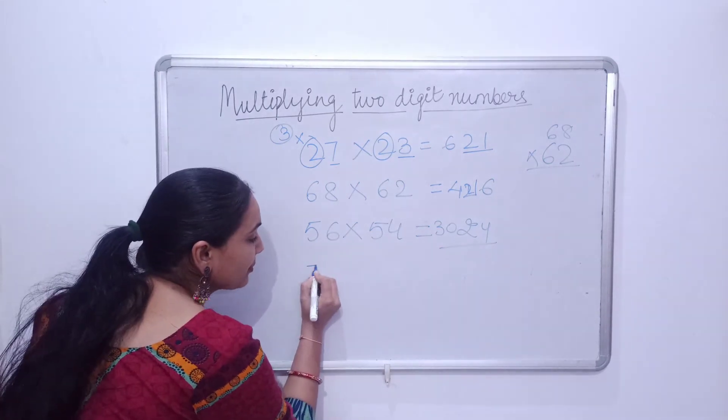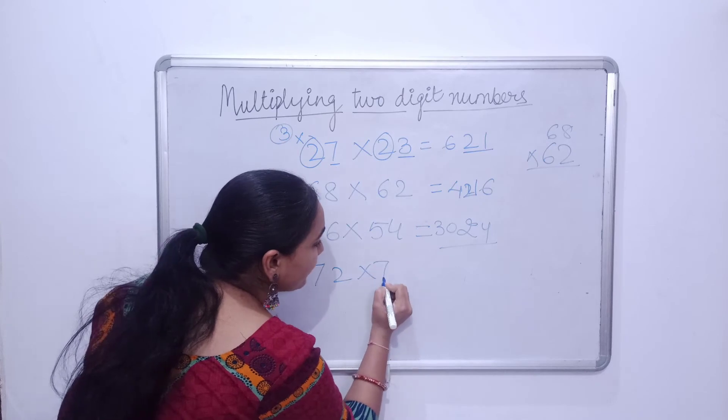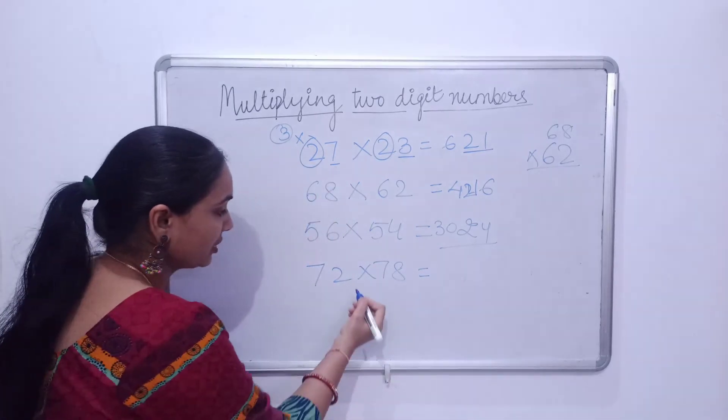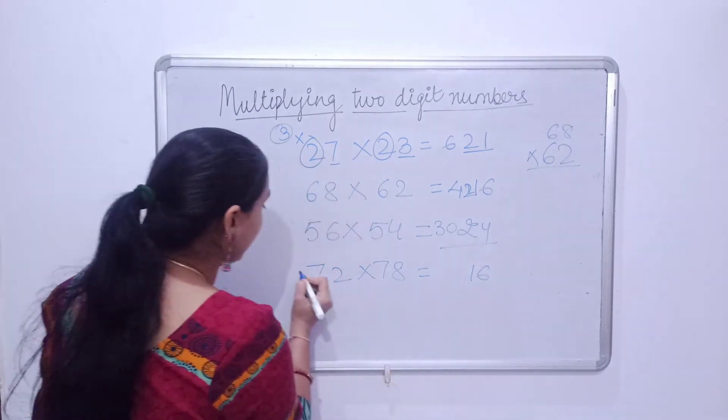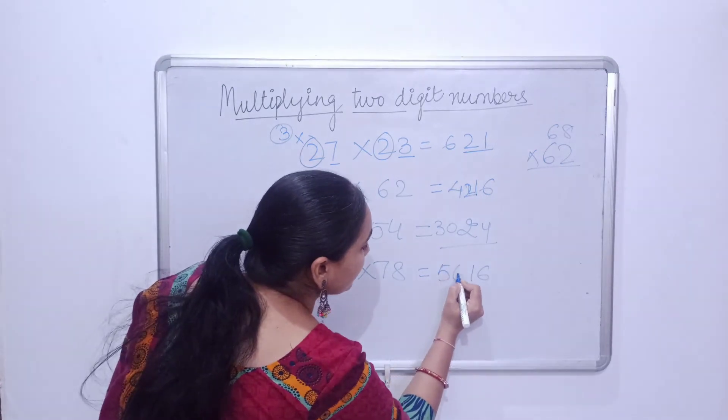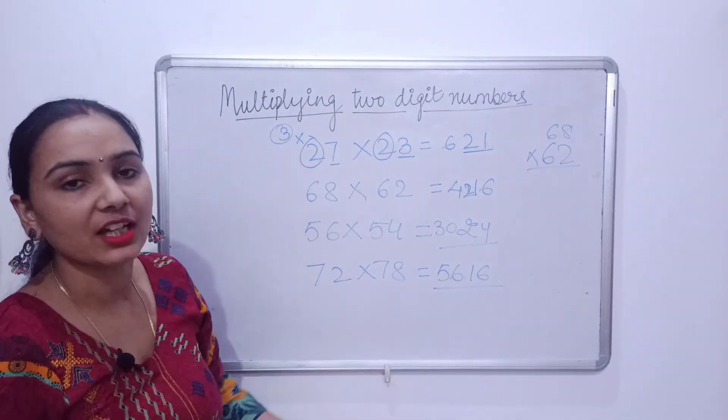Let's take another example: 72 into 78. 2 times 8 is 16, and 7 times 8 is 56. So here is the answer: 5616.